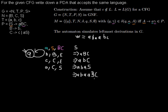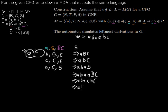Now again we have two non-terminals in the string and I have to take the leftmost non-terminal, which is B. So I exchange the non-terminal B by a terminal B. And now I have to exchange the non-terminal C by a terminal C. And now I got the word that I wanted to derive from the grammar.